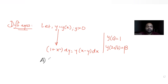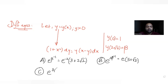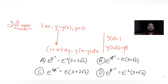The first option is e raised to β⁻¹ = e raised to −2 into (3 + 2√2). The second option is e raised to 3β⁻¹ = e into (5 + √2). The third option is e raised to 3, and the last option is e raised to β⁻¹ = e raised to −2 into 5. We need to figure out which one is the correct solution.